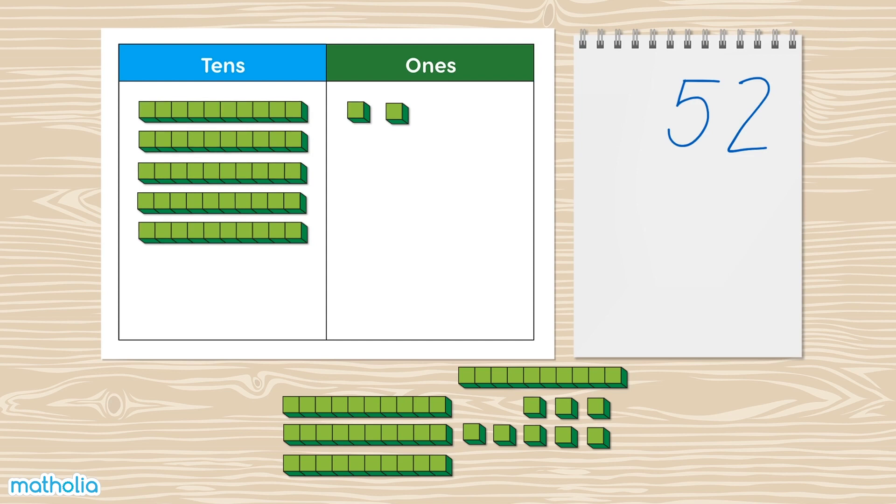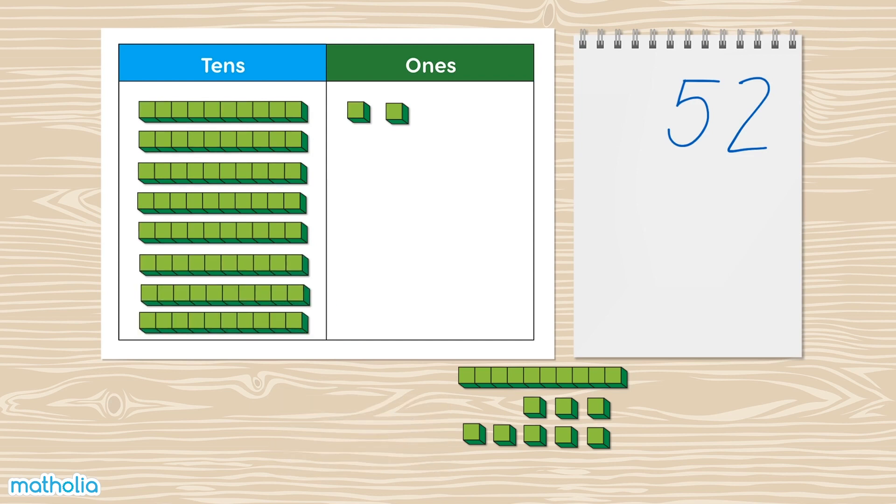We can show 37 using 3 tens and 7 ones. Let's write 37 here.